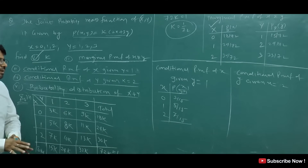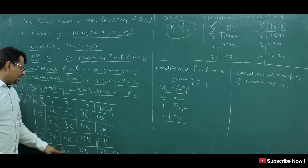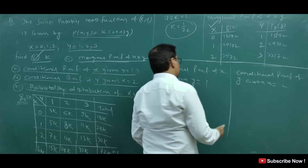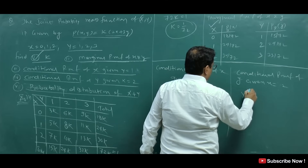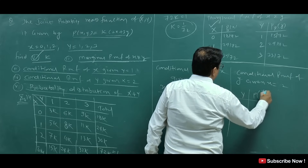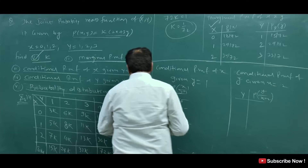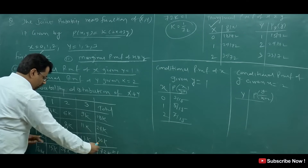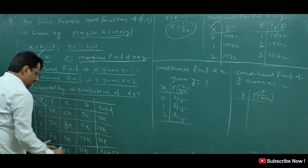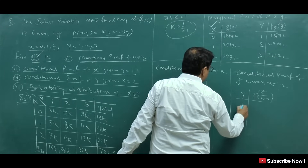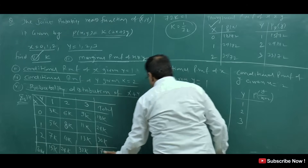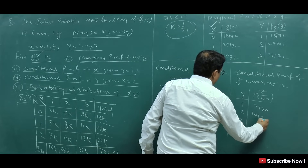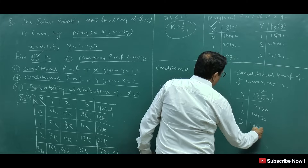If we want conditional PMF of X given Y equals 2, it is: 6 by 24, 8 by 24, and 10 by 24. Now, conditional PMF of Y given X equals 2: we look at X equal to 2 row, which has total 30K. Dividing each value: P(Y=1 | X=2) = 7 by 30, P(Y=2 | X=2) = 10 by 30, and P(Y=3 | X=2) = 13 by 30.